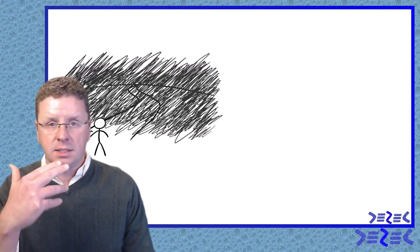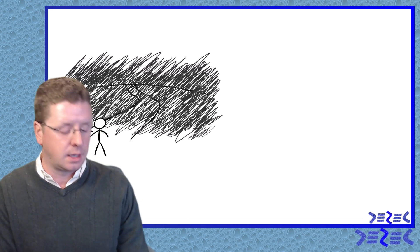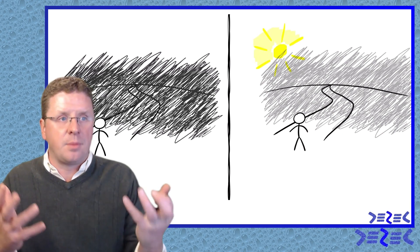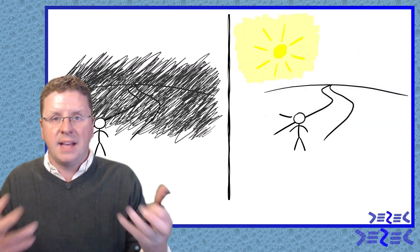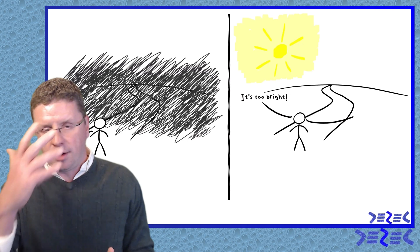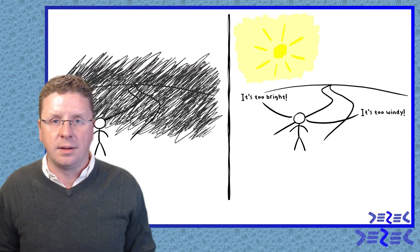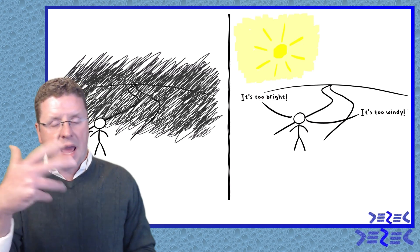Imagine we get what we ask for and there's something that lights the way. As this thing lights the way we think, my gosh, this is way too bright! And this road, why is it so windy? Remember, we were just asking for a way to see the road.